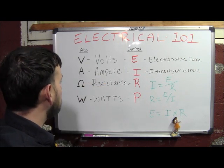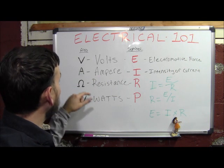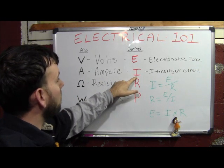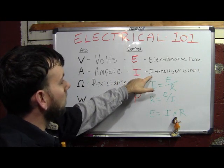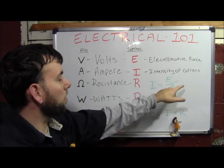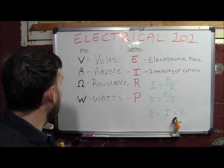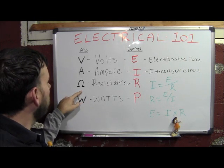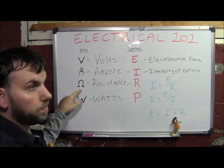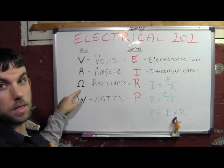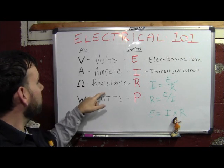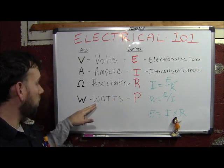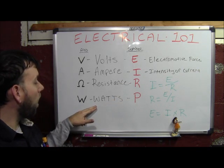Next is the ampere. The abbreviation is the letter A, and the electrical symbol is I — which stands for the intensity of current. After that is resistance. The abbreviation for resistance is the Omega symbol, and the electrical symbol is R.